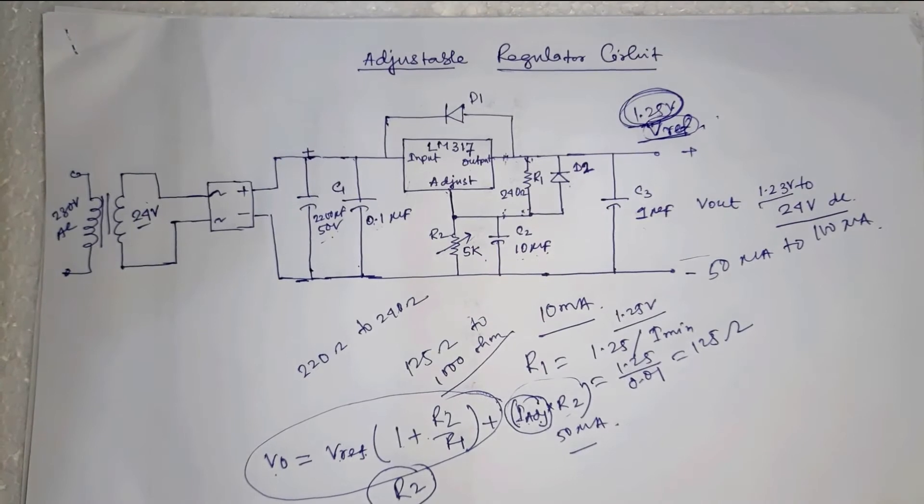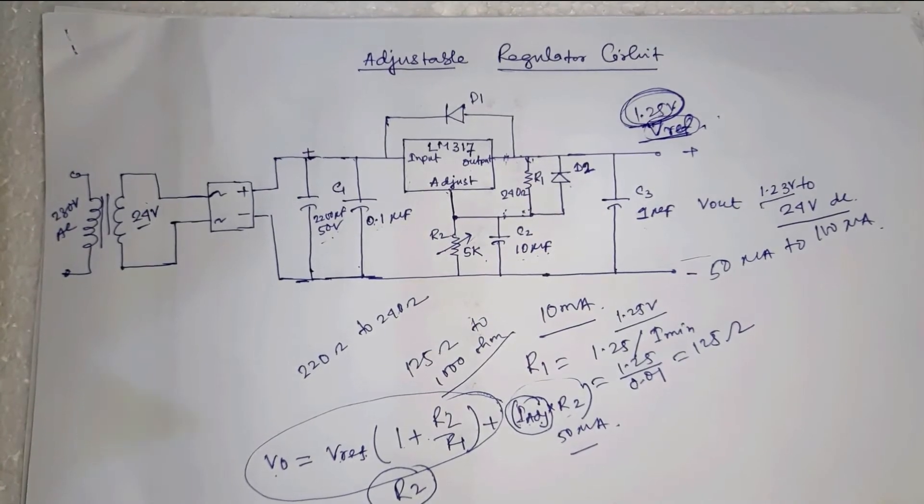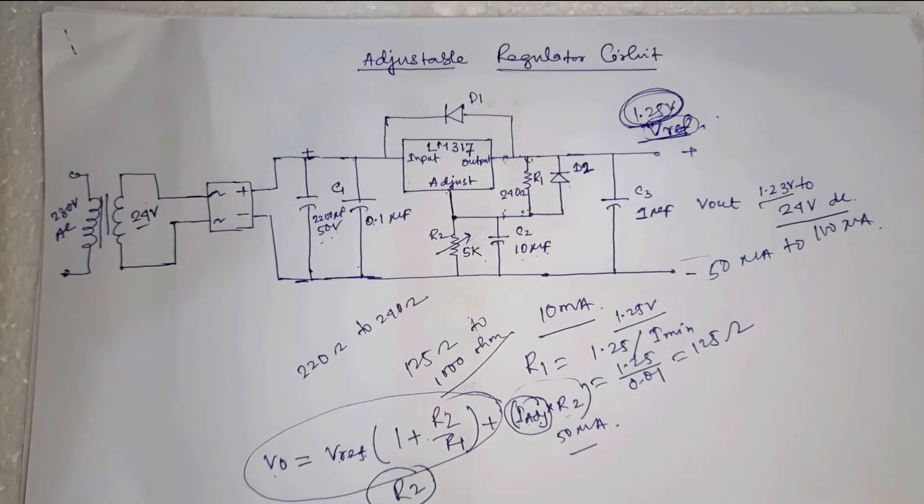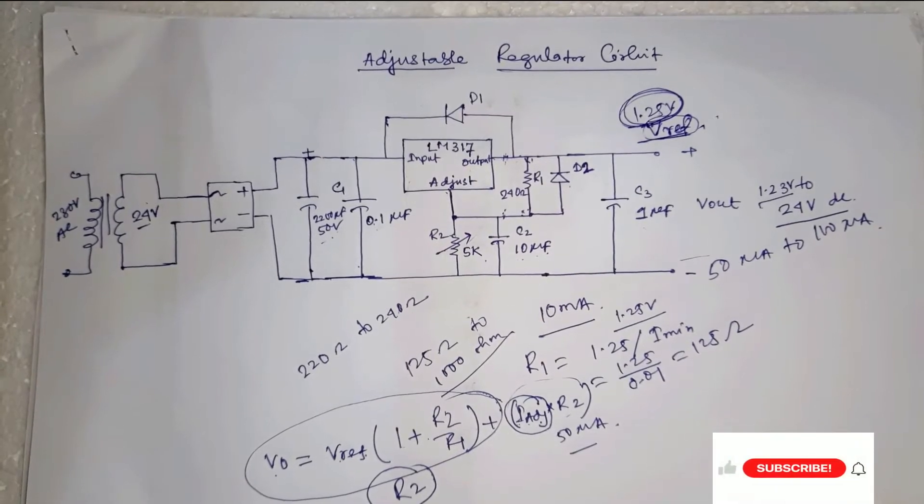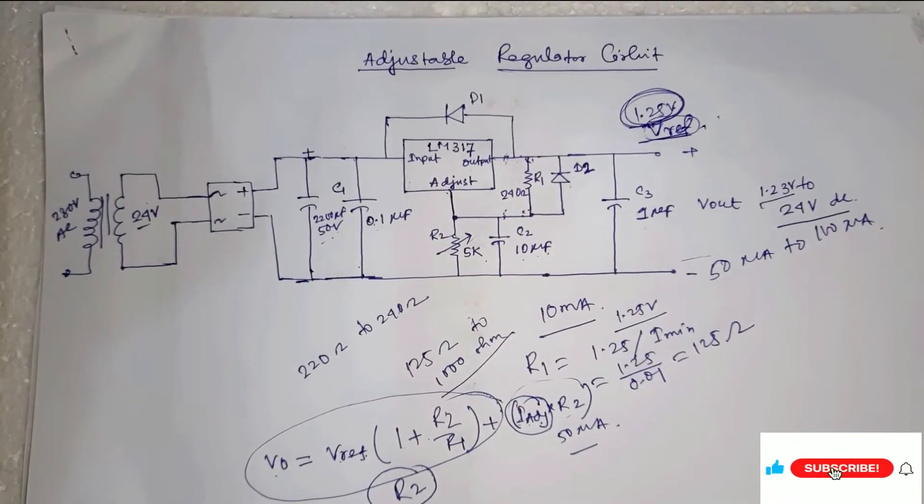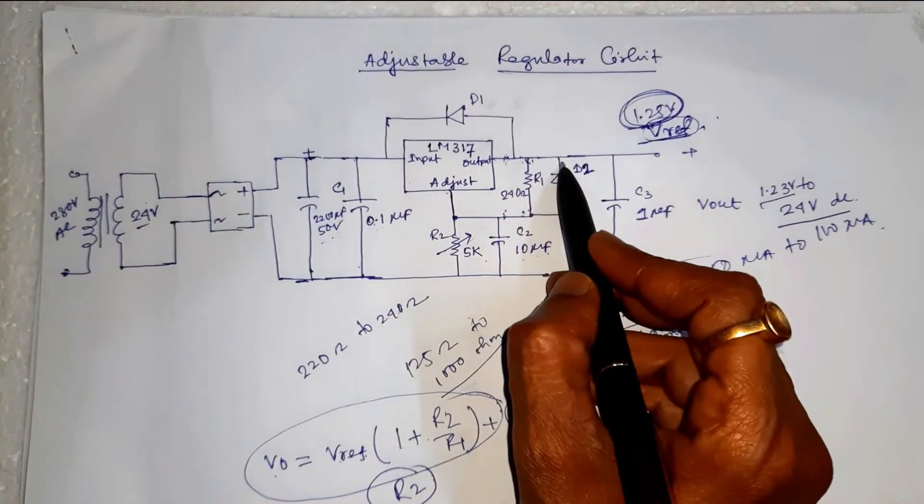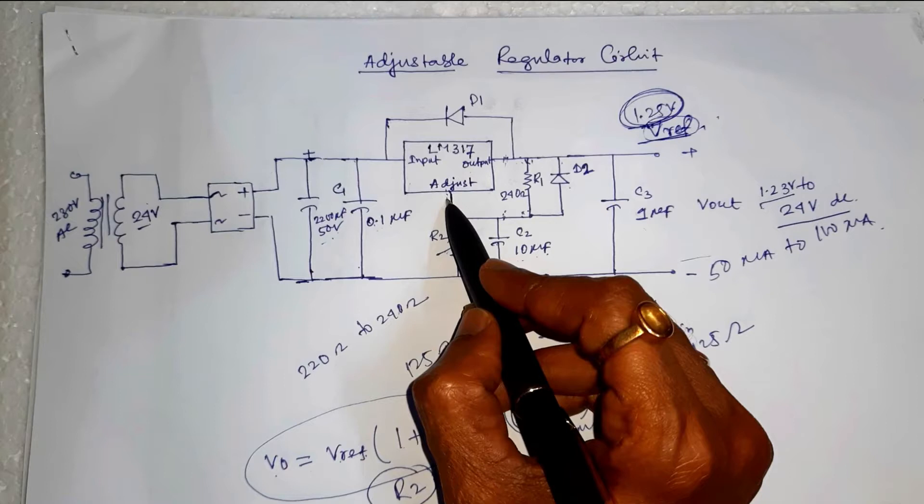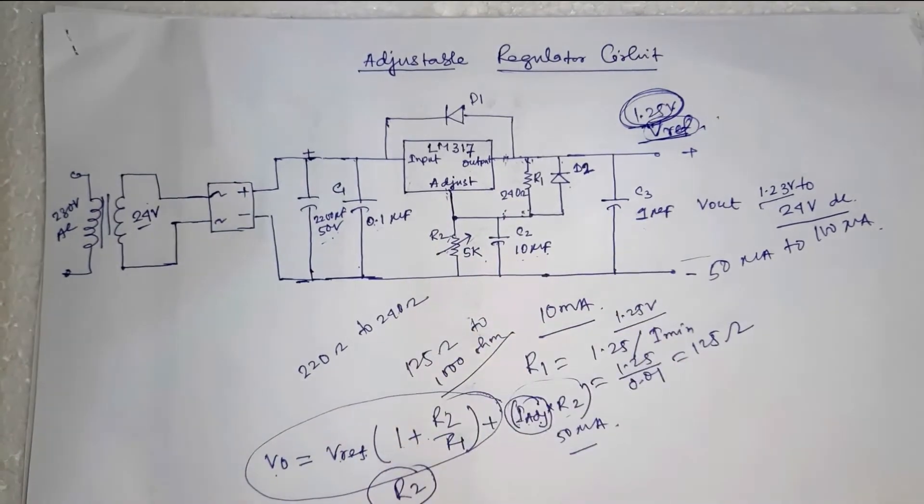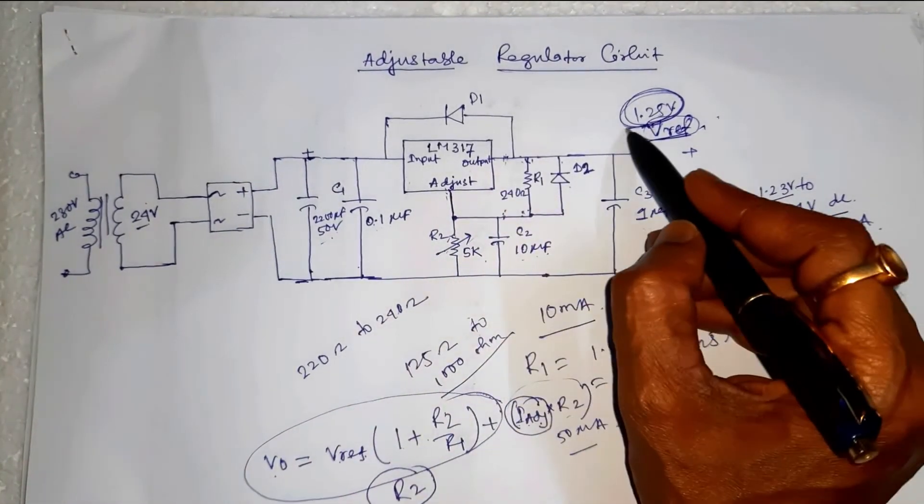But one of the major disadvantages, it has a 1.25 volt voltage reference which is configured in a feedback loop such that it always attempts to keep the voltage between the output pin and adjust pin equal to 1.25 volt.